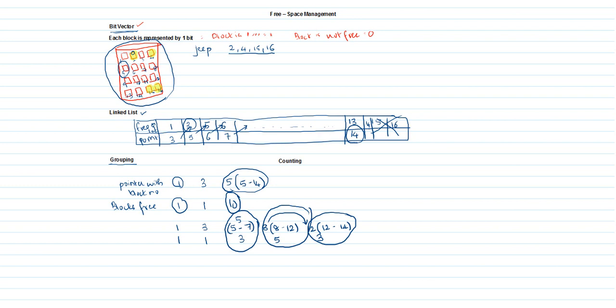This is how free space management is done by grouping. The next method is counting. Counting is usually dealt with in continuous memory management deallocation. Suppose a file named TR is getting deallocated from blocks 4, 5, 6, 7, and 8.